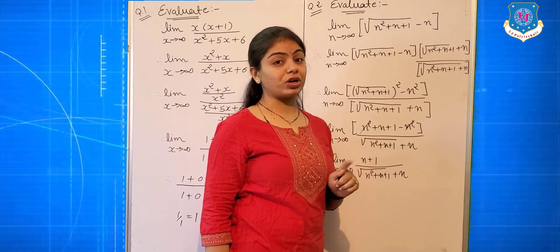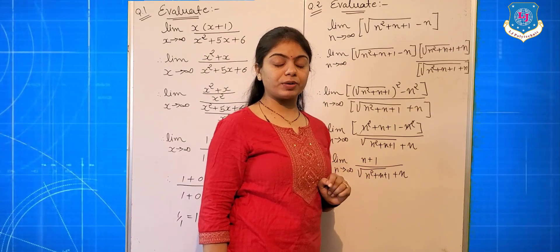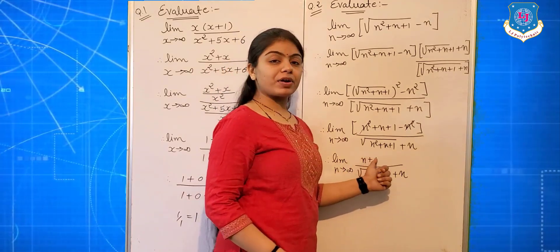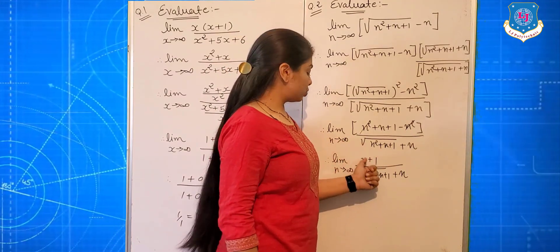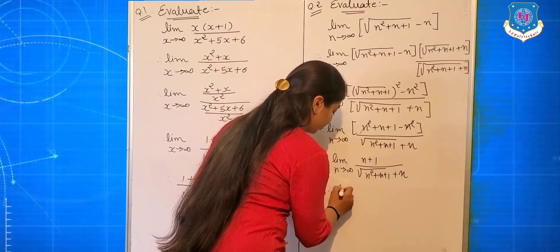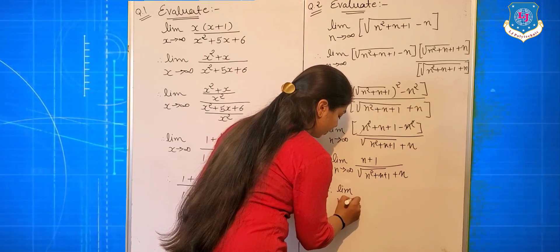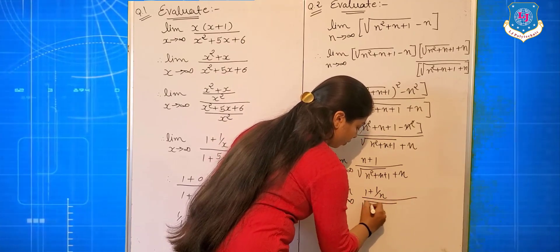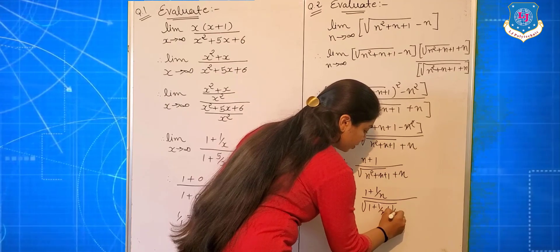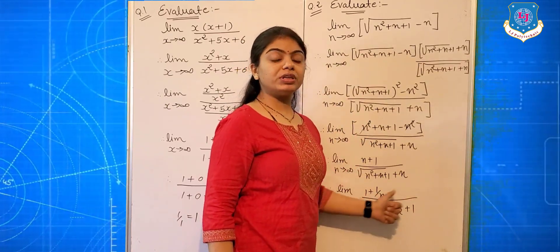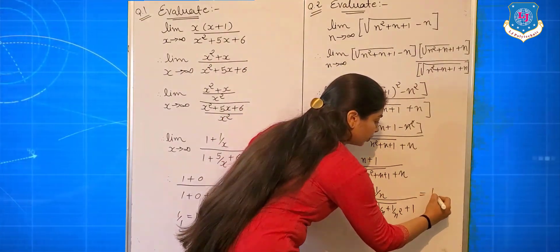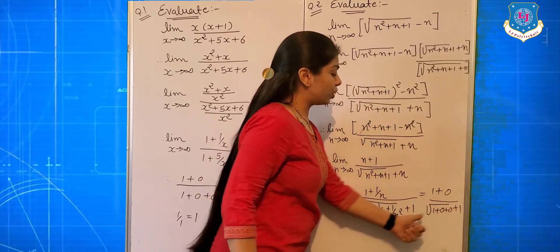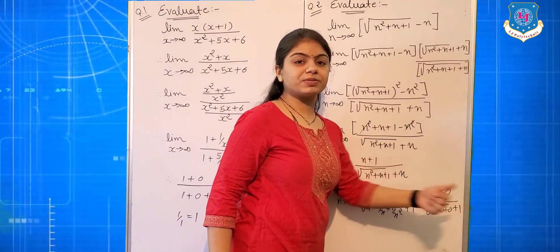Now we apply the standard form: limit n tends to infinite, 1 upon n = 0. The maximum power in both numerator and denominator is 1, so divide by n. This gives: limit n tends to infinite of (1 + 1/n) upon (√(1 + 1/n + 1/n²) + 1). Putting the limit: numerator is 1 + 0 = 1, denominator is √(1 + 0 + 0) + 1 = 1 + 1 = 2.